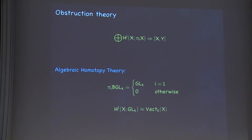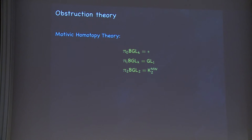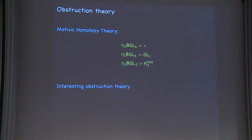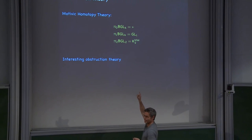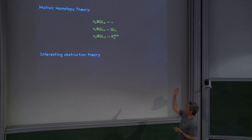On the other hand, motivic homotopy theory does. The fundamental group of BGLK in motivic homotopy theory is GL1, and pi2 is the second unramified Milnor-Witt K-theory — and I probably need K to be at least 3 or something. There's a little bit of information known about the higher homotopy sheaves, and it does lead to an interesting obstruction theory. So Morel and Asak and Fasel investigated problems of splitting free summands off of projective modules over regular rings in low Krull dimension using these methods.